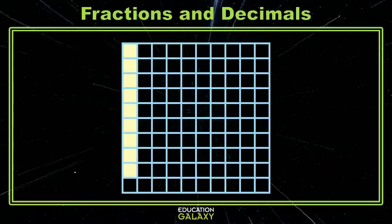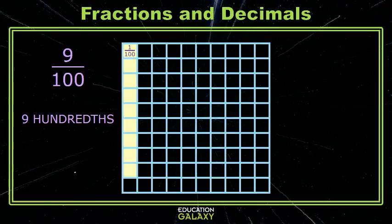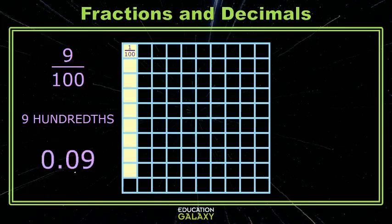Let's look at an example. Here we have nine of those little squares shaded. That's nine-hundredths. And we can write that with words. We can write it as a fraction. And we can write it as a decimal.